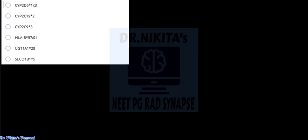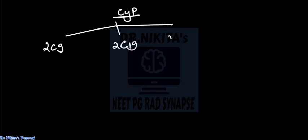So before I come to the answer of this question, let me quickly tell you some important points which are very important in pharmacogenomics. So you have the various cytochrome P. In that you have cytochrome P2C9, 2C19, and 2D6.